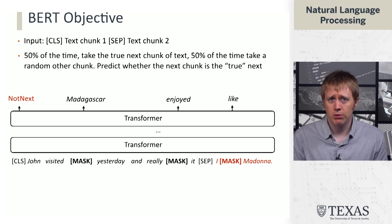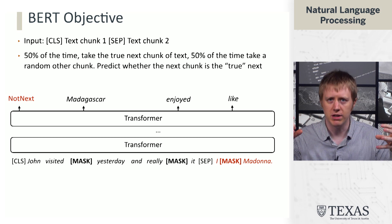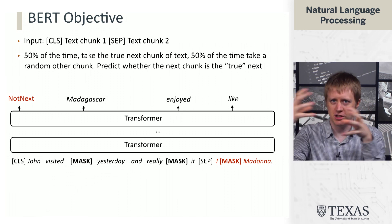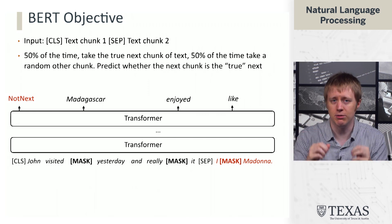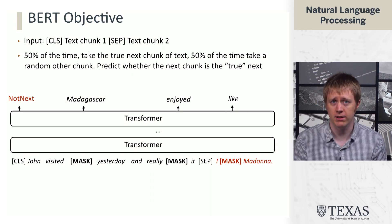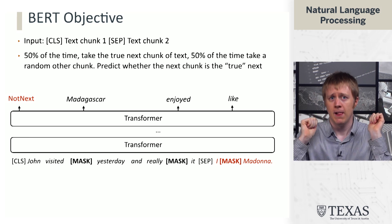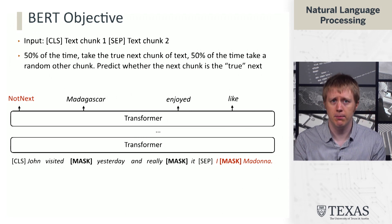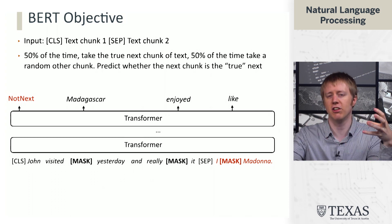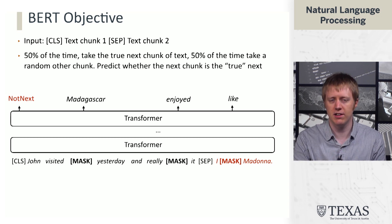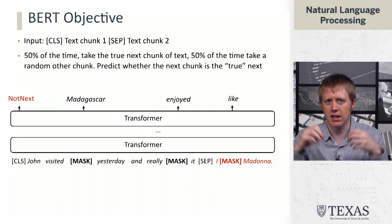The idea behind this was to get even more non-local reasoning into the model — to make it really think about the interactions between the two chunks in order to understand whether they are continuations of each other. That prediction gets localized at the CLS token, which can attend everywhere. We have this one token in the model that is going to be useful for making a classification decision that looks at the entire input. The CLS token is usually what people use to aggregate information about the whole context.